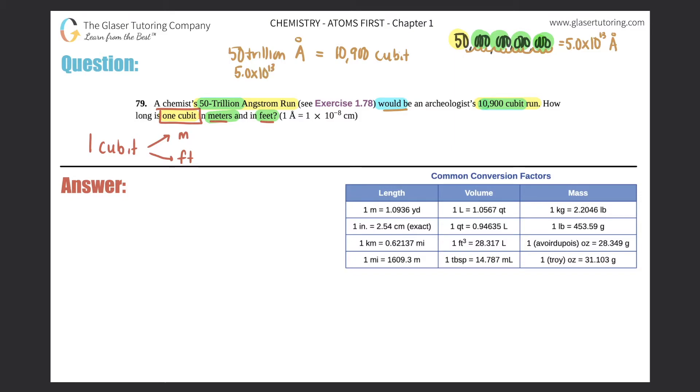So we could make a ratio for this. We could say that 5.0 times 10 to the 13th angstrom equals 10,900 cubit, but we don't like to use that in chemistry. We like to use our ratios, so we can say that 5.0 times 10 to the 13th angstrom is equal to 10,900 cubit, or since they're exactly the same we can just vice versa it and say 10,900 cubit equals 5.0 times 10 to the 13th angstrom.